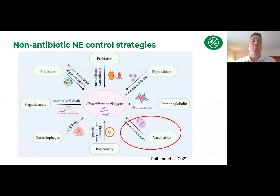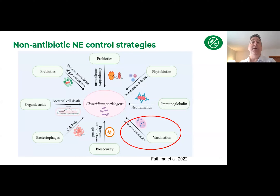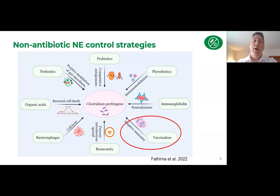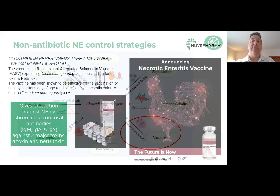That's really where other feed technologies come in. Many have heard of phytobiotics or essential oils from plants, as well as probiotics, prebiotics, organic acids, immunoglobulins, and bacteriophages — all working through different modes of action. One area that hasn't received a lot of attention for necrotic enteritis is adaptive immunity through vaccination, and that's really where Huvepharma has come in with the necrotic enteritis Type A vaccine.